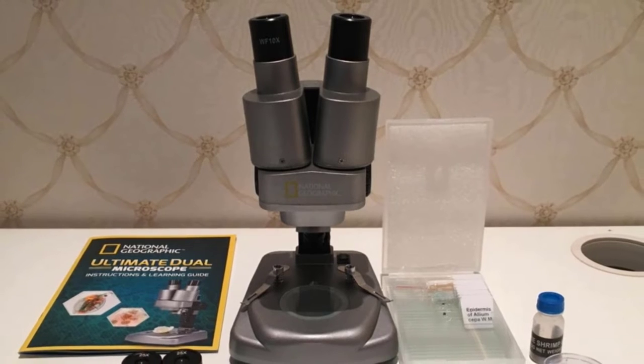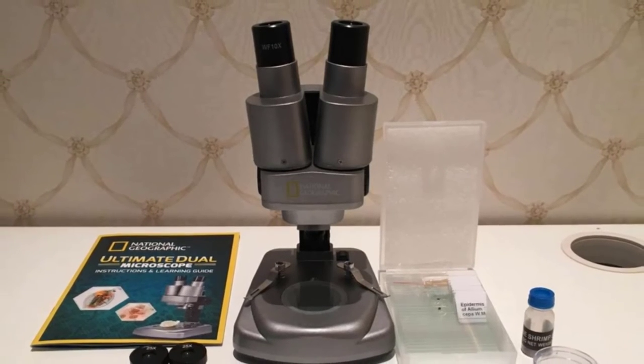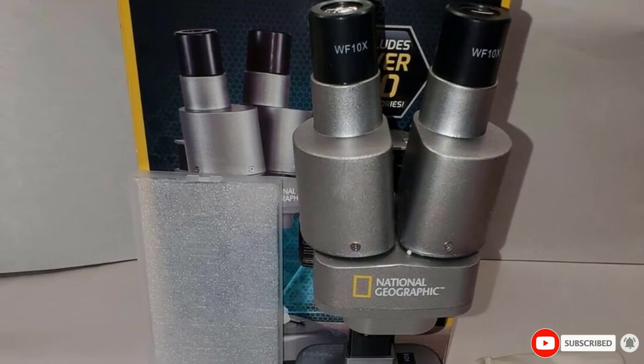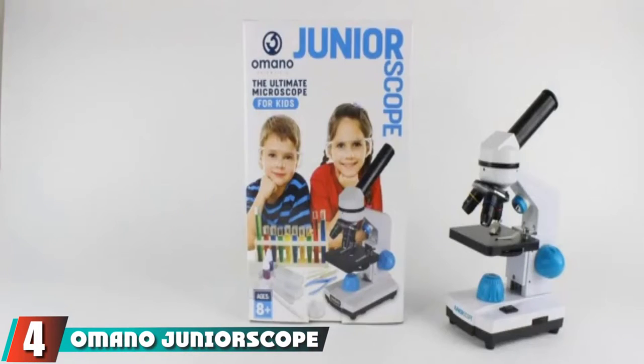The kit that comes with the microscope features some tweezers, mounted samples, blank slides, and brine shrimp experiment to kickstart your kid's microscopic journey. Next, at number four, we have Amano Junior Scope Microscope for Kids.